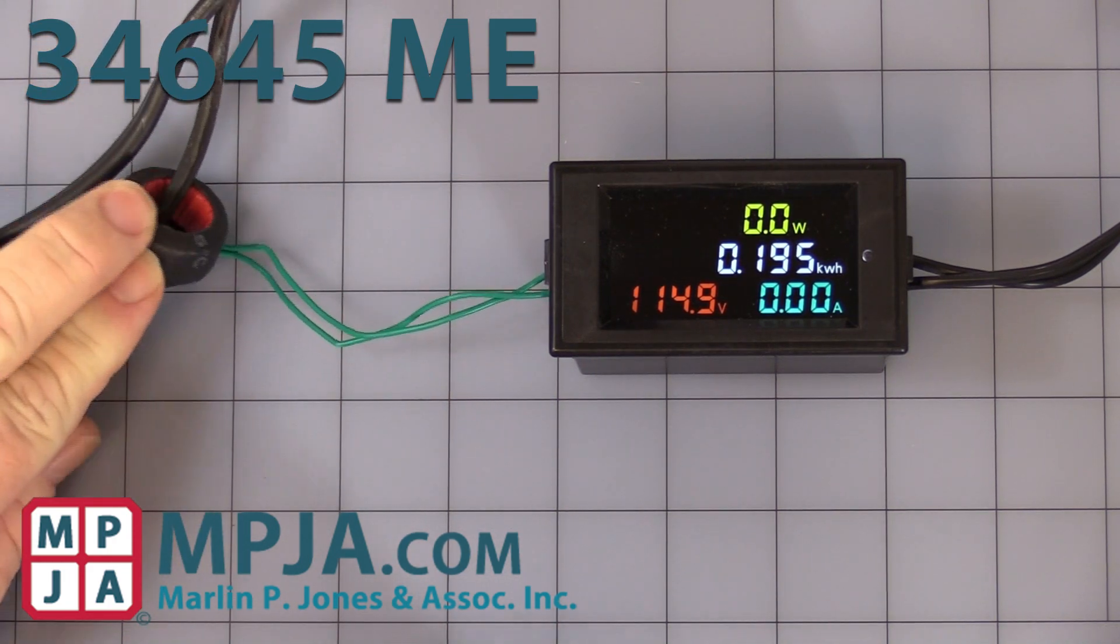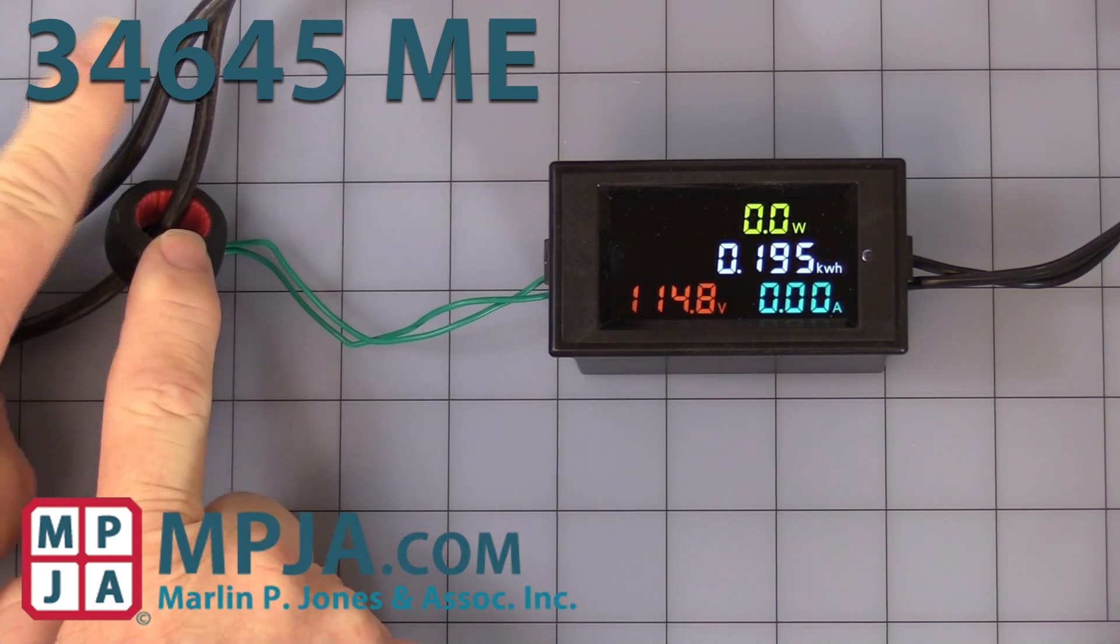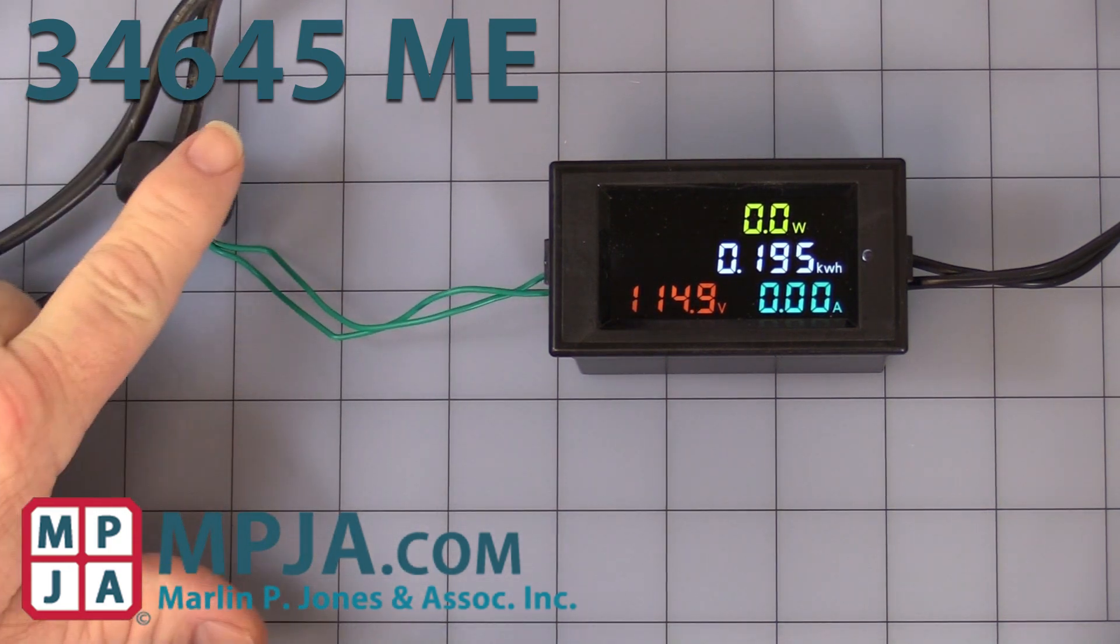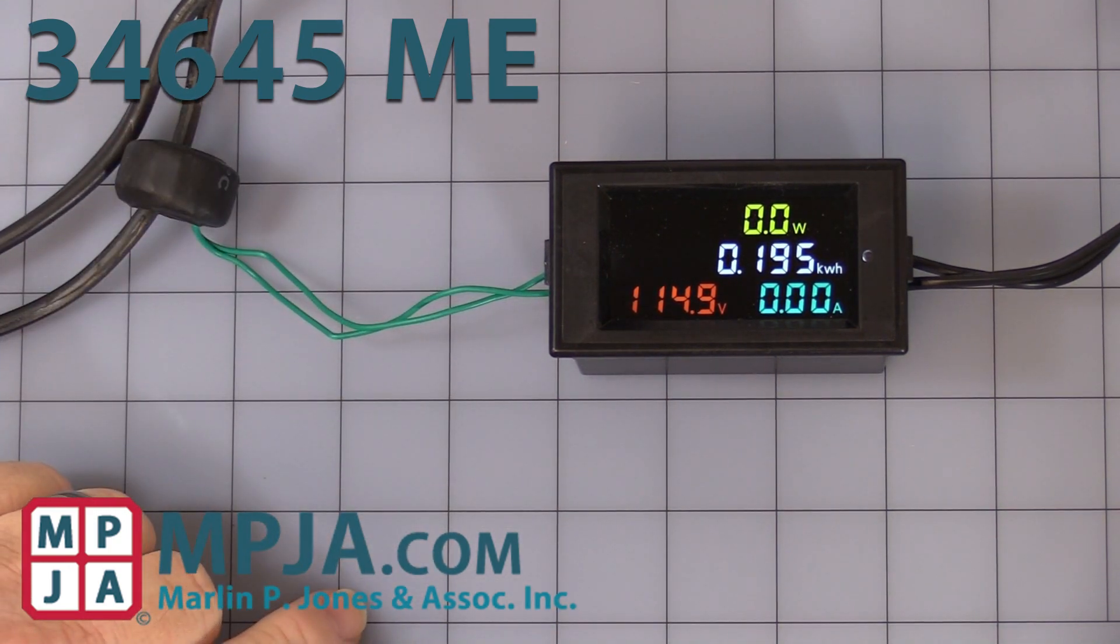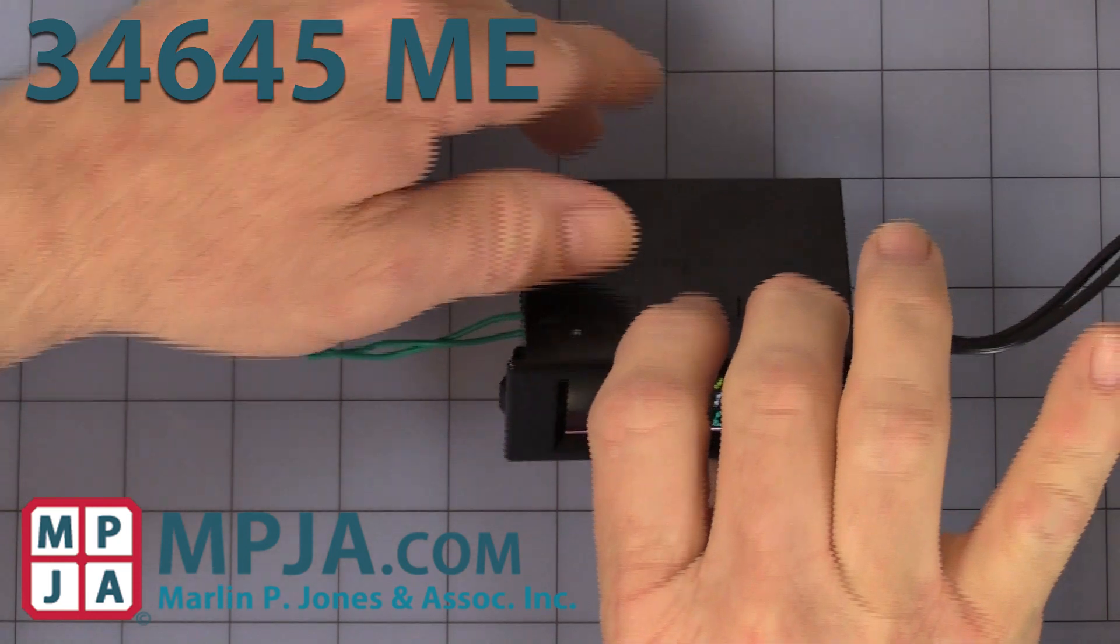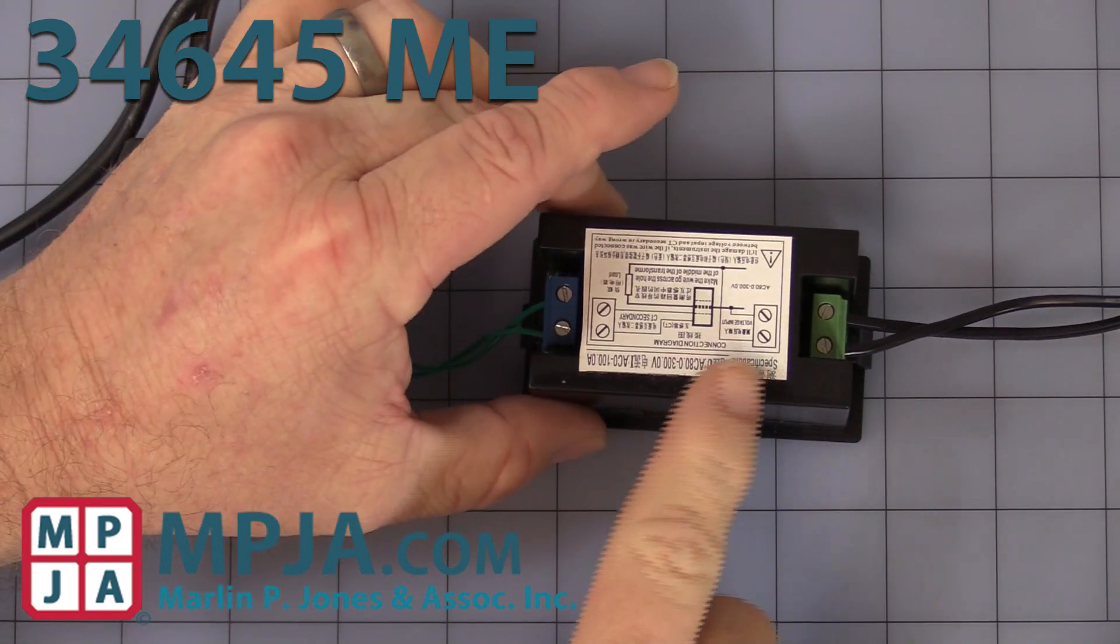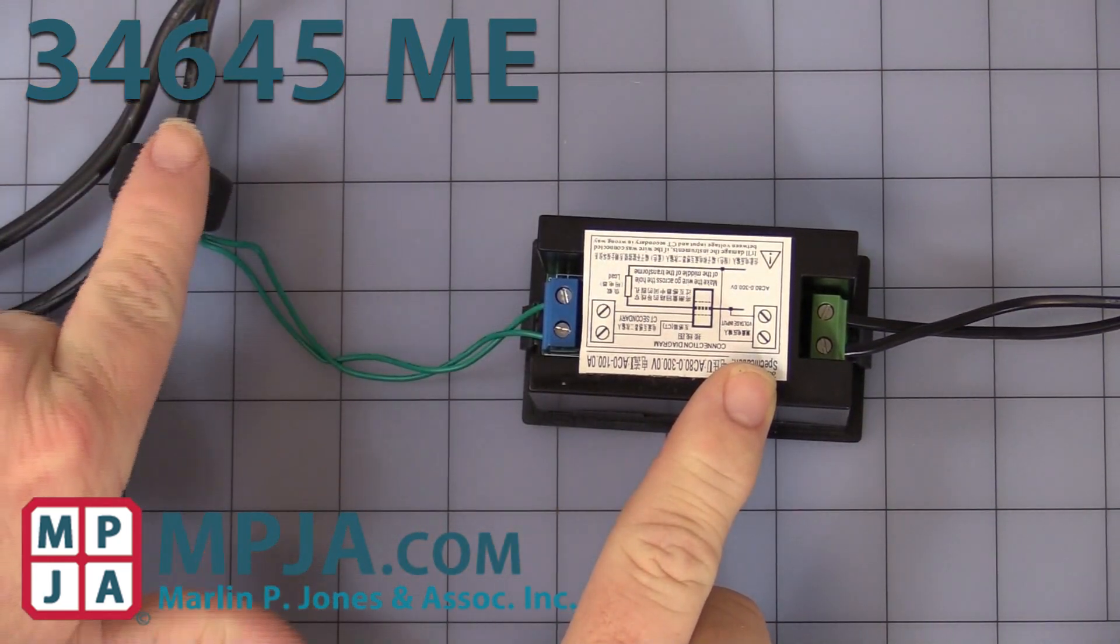It can only go through one leg at a time, one line or neutral, not both. It will not measure if you do so. We'll carefully turn it over. Be sure you hook up the current transformer to the correct terminal.